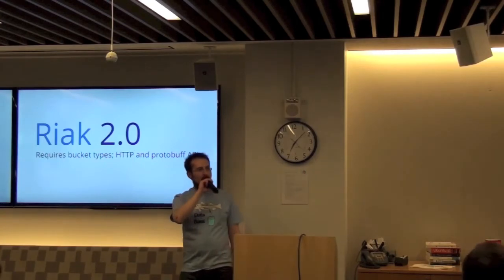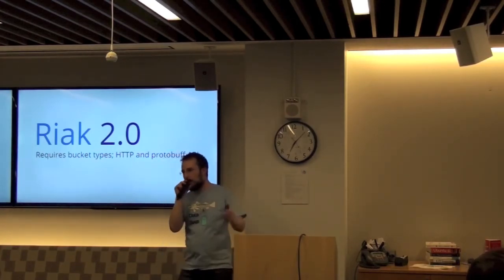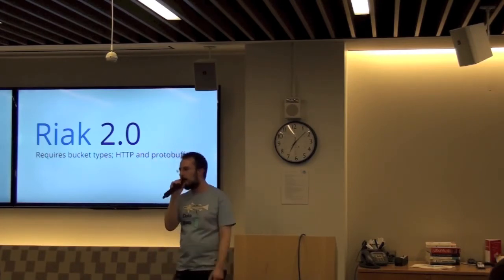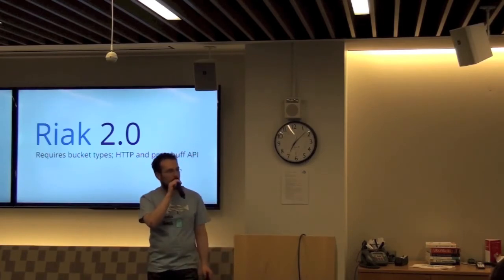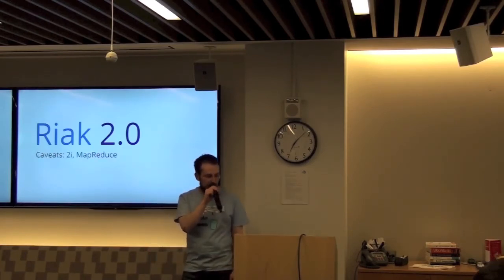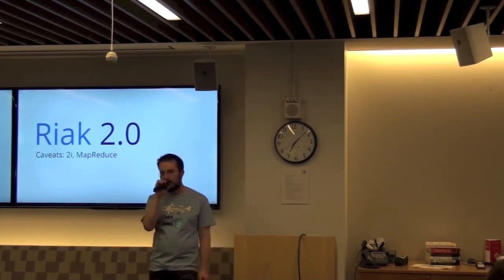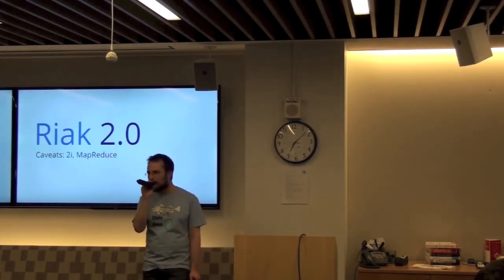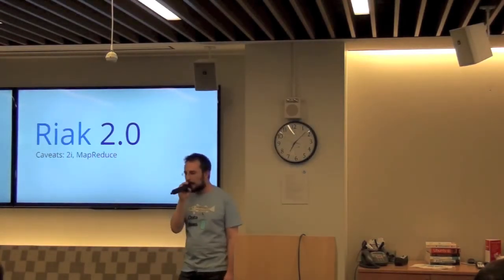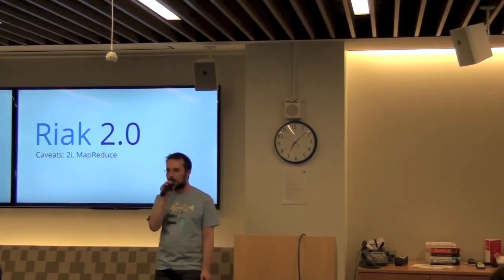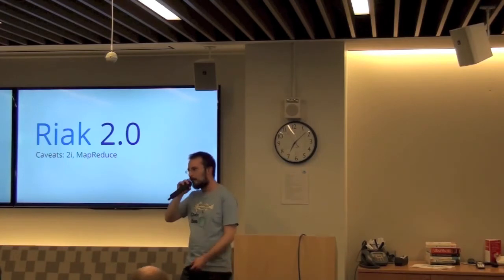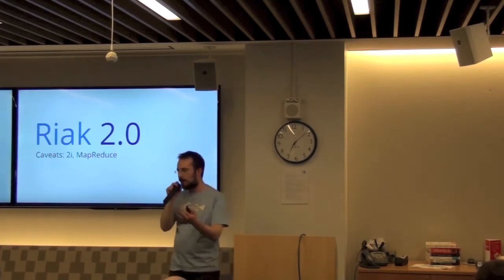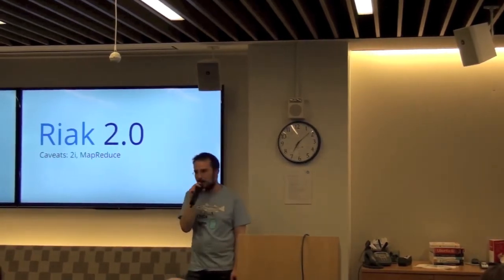In Riak 2.0, new data types are exposed over both the HTTP API and the Protocol Buffers API — a binary format for faster data streaming. They can't be used with secondary indexing or MapReduce, just key-value operations. There's also a full-text search engine coming in Riak 2.0 via tight integration with Apache Solr, giving you features like top-rank, pagination, and faceting — and you can index these CRDT data types, which is really exciting.